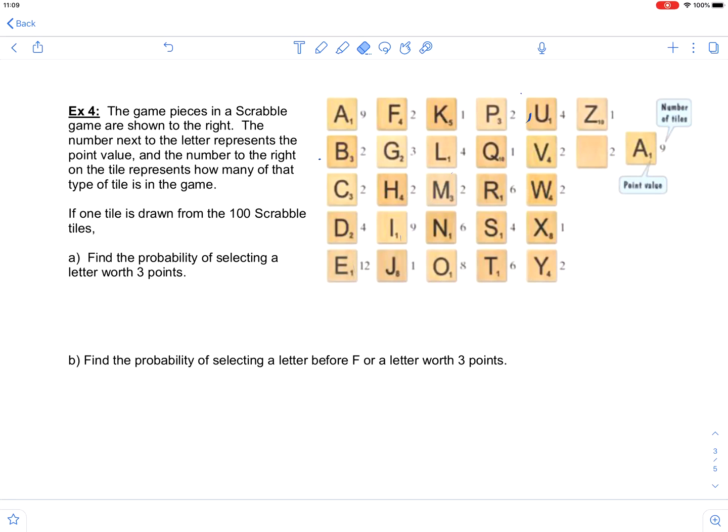And notice they're asking here if one tile is drawn from the 100 Scrabble tiles, we're going to find some probabilities. So if you were going to add all of the quantities together, you would get 100. But they did that part for you. So there's 100 tiles total. We want to find the probability of selecting a letter worth three points.